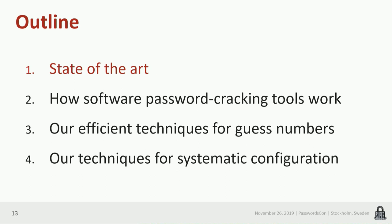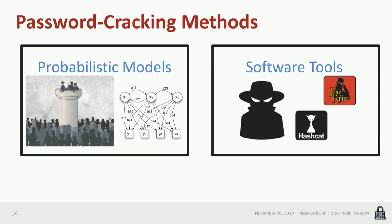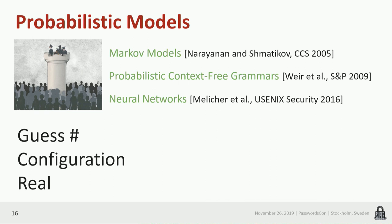Since the guess number depends highly on the attack you execute and the model behind it, I want to introduce the state of the art in password cracking. There are two main classes of password cracking methods. The first are probabilistic algorithms or models, and the second are software tools like John the Ripper — used in the InfoSec community. We have Markov models, probabilistic context-free grammars (PCFGs), and neural networks — two of which were created by people here in this room.